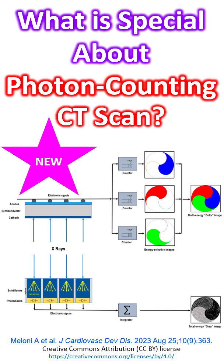Instead of the two-step conversion in conventional CT, photon counting CT uses direct conversion using a layer of semiconductor. The semiconductor layer is made of cadmium telluride, cadmium zinc telluride, or silicon, and has a large area cathode on the upper side. The lower side has pixelated anode electrodes. A high voltage in the range of 800 to 1000 V is applied between the cathode and anodes to create a strong electric field.